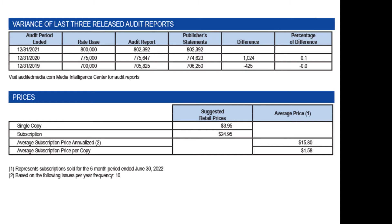Finally, the prices paragraph shows the suggested retail price for a single copy of the magazine and a subscription, as well as the average subscription per copy and annualized price of the same magazine for subscription sales that occurred in the statement period.